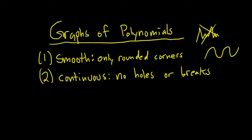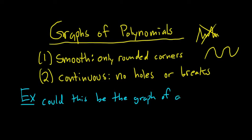Let's look at some examples and we'll see if these could be the graphs of polynomials. The question is, could this be the graph of a polynomial? We're looking for rounded corners, that means it's smooth, and continuous, so no holes or breaks. Let's see. Something like this.